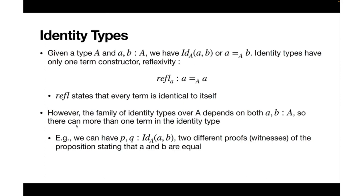We can form the family of identity types over A, which depends on both a and b. We can have two terms of that type — for example P and Q — corresponding to two different proofs of the proposition stating that a and b are equal. The identity type between a and b essentially says that a and b are equal, and P and Q are proofs of that.